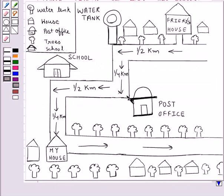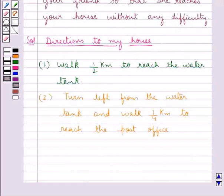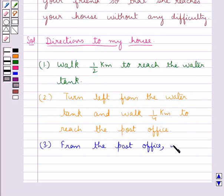After reaching the post office, she should take a right turn and walk half a kilometer and reach the school. So our next direction is: from the post office, take a right turn and walk half a kilometer to reach the school.